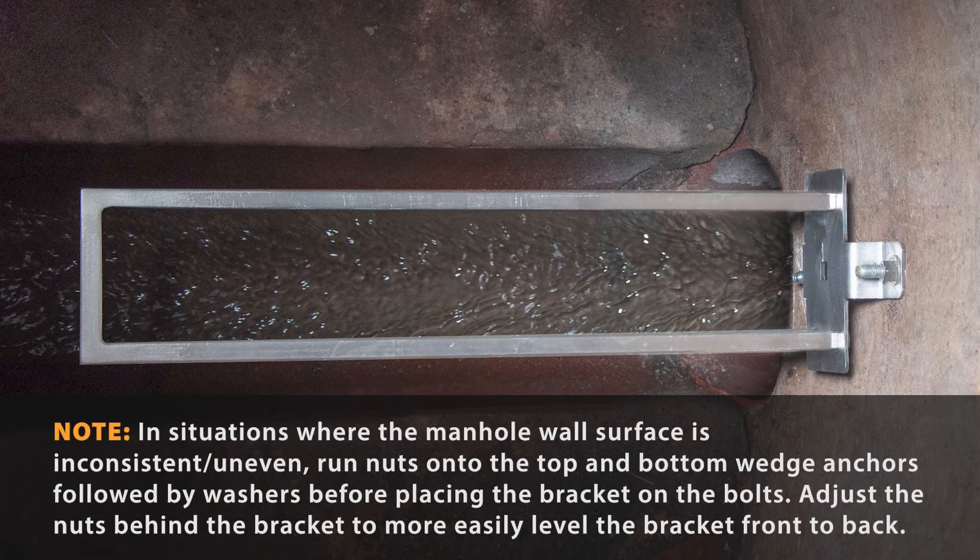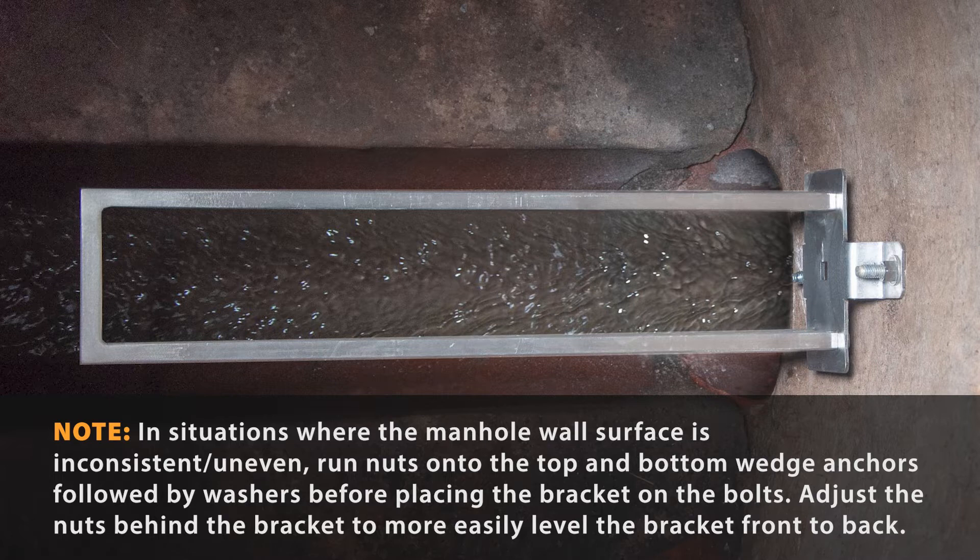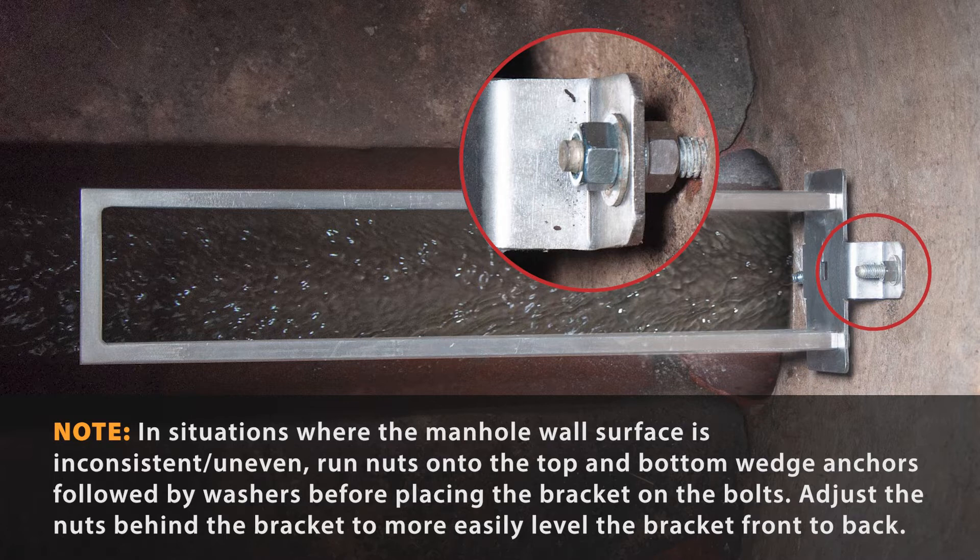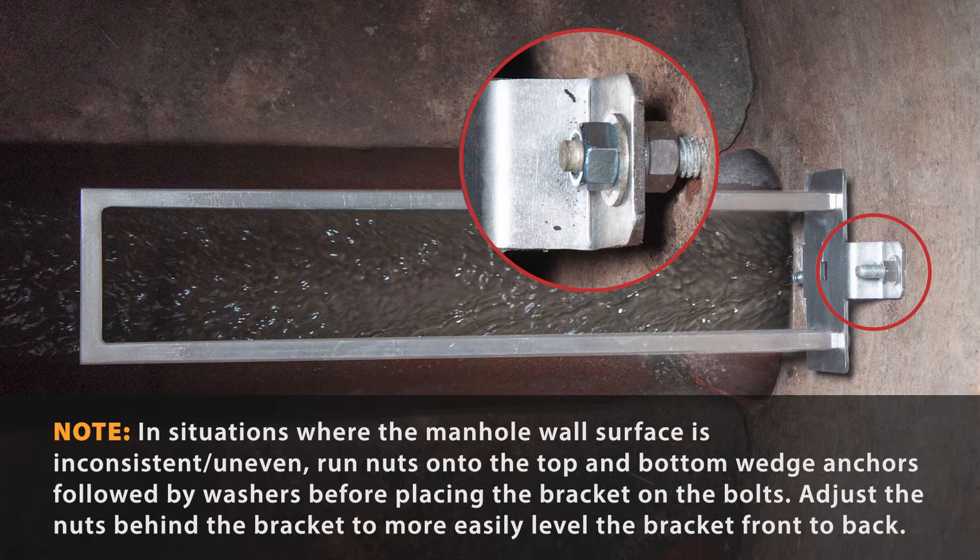In situations where the manhole wall surface is inconsistent or uneven, run nuts onto the top and bottom wedge anchors, followed by washers before placing the bracket on the bolts. Adjust the nuts behind the bracket to more easily level the bracket front to back.